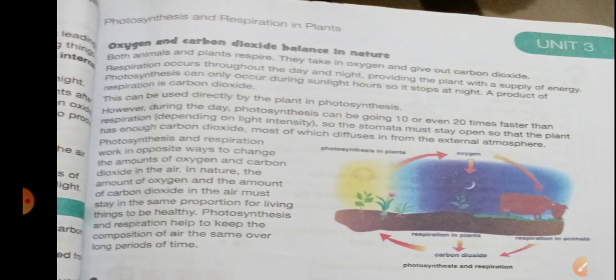But at night time, the process of photosynthesis stops because the sun is not available. Remember, at night time the process of photosynthesis does not happen. So at night time, plants start to excrete carbon dioxide through their stomata. And in nature — in our atmosphere — there is a balance of oxygen and carbon dioxide.